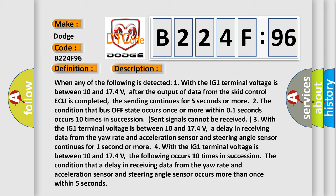Two, the condition that bus off state occurs once or more within 0.1 seconds occurs 10 times in succession. Sent signals cannot be received.